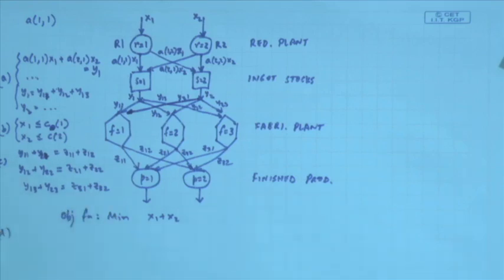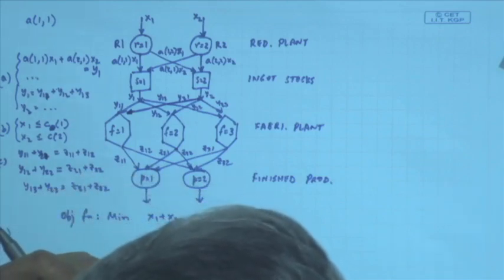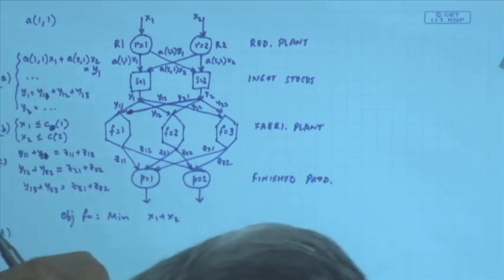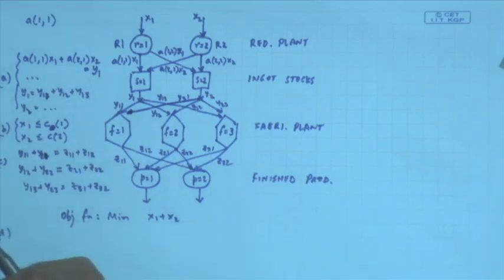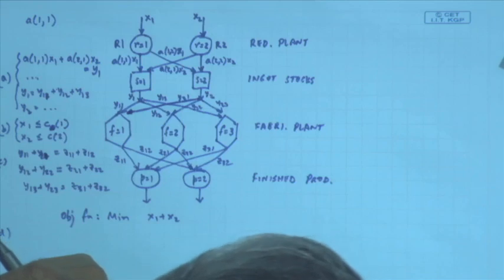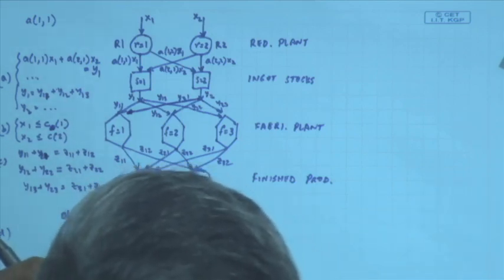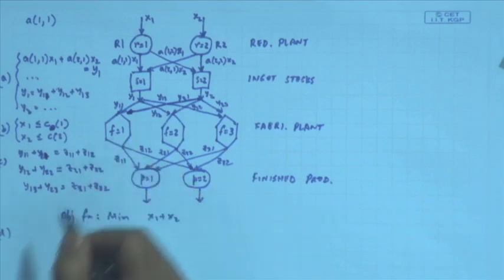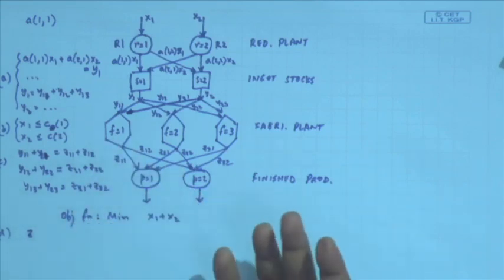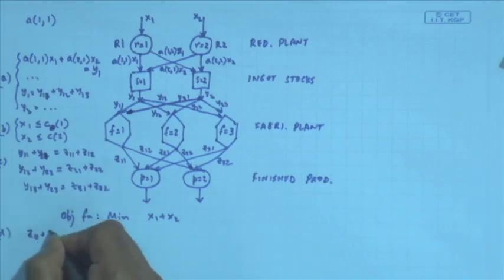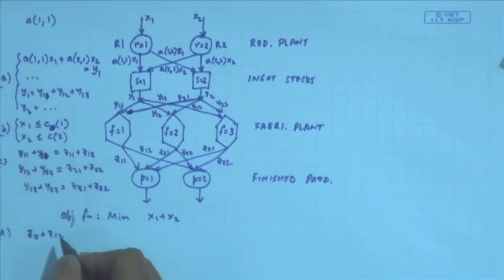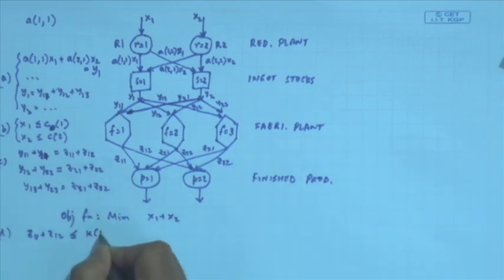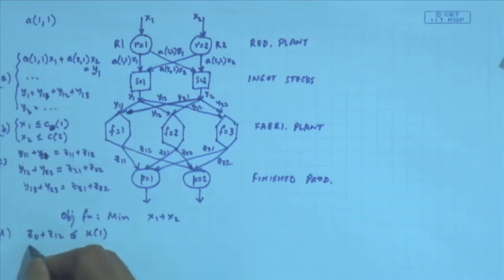Constraint D is the capacity of the fabricating plant. Fabricating plant F = 1 has capacity K₁ and plant 2 has capacity K₂ — these are given to you. The total processing at F₁ is Y_{1,1} + Y_{2,1} or equivalently Z_{1,1} + Z_{1,2}. That should be less than or equal to K₁.